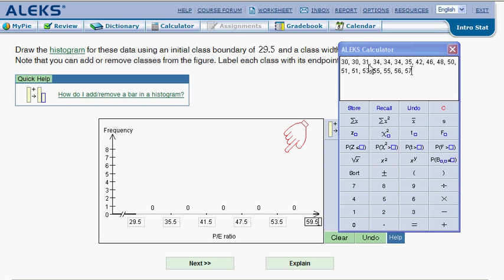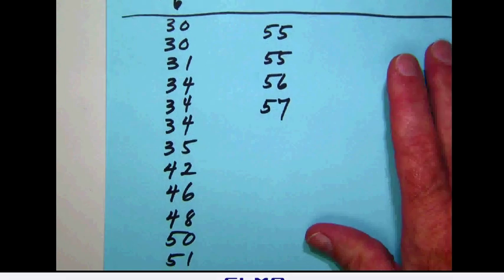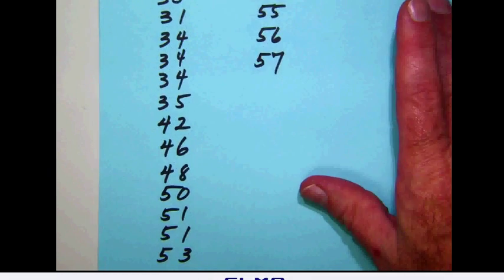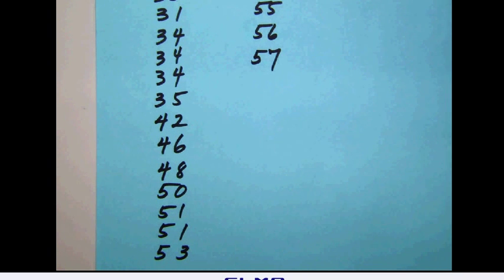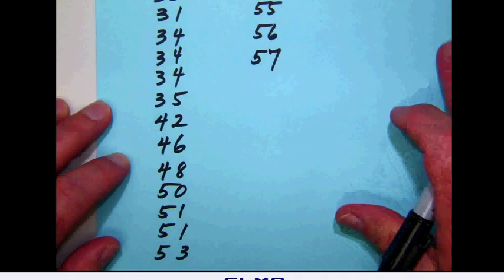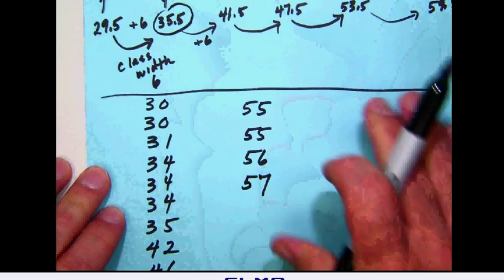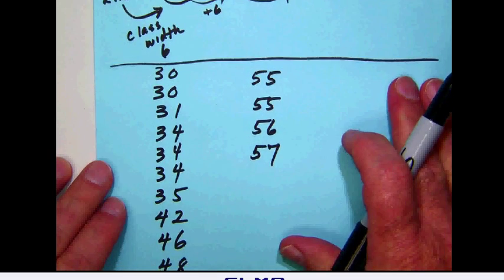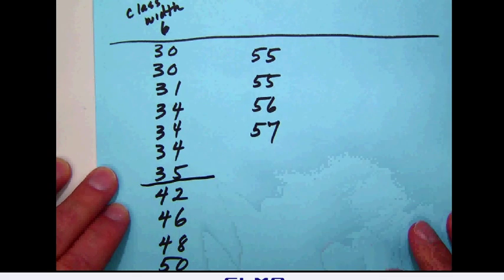So my plan here is to go back over and copy those numbers down on my sheet of paper. And then what I will do is I will simply go in there and I will cut these numbers according to those classes that I set up. Now remember the first one starts at 29.5 and that class ends at 35.5. So I'm going to look down my list and see where that 35.5 would be. And notice that that would be right there after the 35 but before the 42.